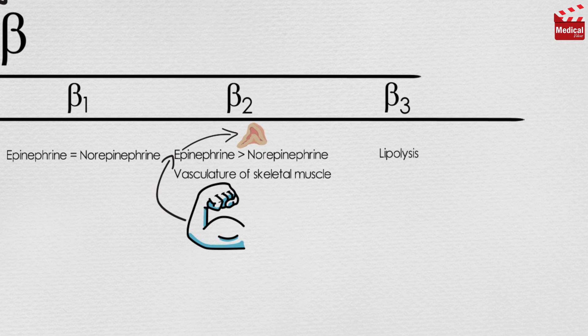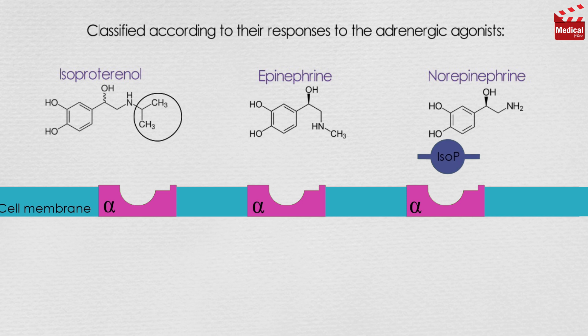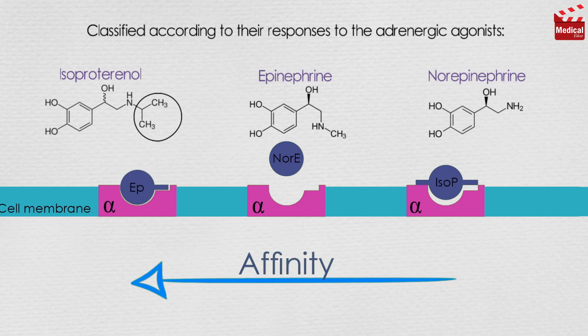Beta 3 receptors are involved in lipolysis and also have effects on the detrusor muscle of the bladder. The alpha receptors show a weak response to the synthetic agonist isoproterenol, but they are responsive to the naturally occurring catecholamines, epinephrine and norepinephrine. They are characterized by a strong response to epinephrine, with less sensitivity to norepinephrine and lesser sensitivity to isoproterenol.